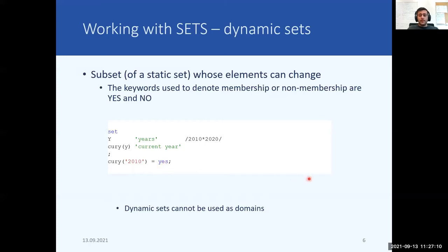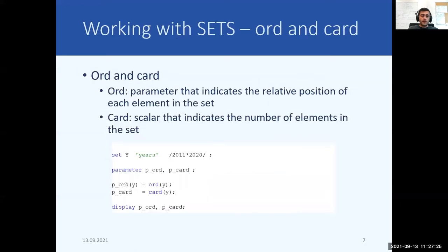Please note that dynamic sets cannot be used as domains. However, the trick is to declare the equation over the entire domain but define it over the dynamic sets. We will see an example in a few slides. The ord and card operators are GAMS functions that allow knowledge of the relative position of a set element within the set. The operator ord returns the relative position of a member in a set, and the operator card returns the number of elements in the set. Please note that for using these operators your set elements need to be ordered; however, you can relax this requirement using the dollar control option of order.